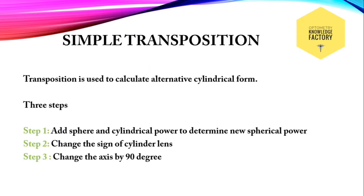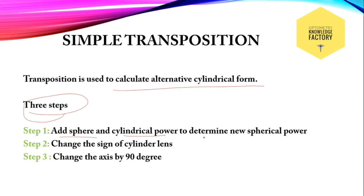As the name suggests, simple transposition is a simple three-step process used to calculate the alternative cylinder form. The first step: add the sphere and cylindrical power to determine the new spherical power.